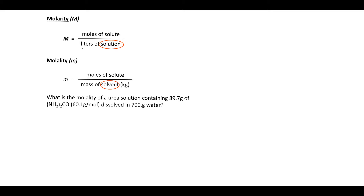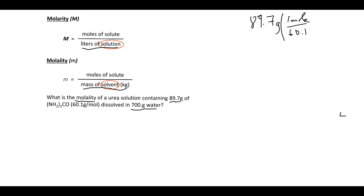For molarity and molality: we need molality for temperature-dependent conversions. Molarity (capital M) is per liter of solution; molality is per kilogram of solvent. If we have 89.7 grams of urea dissolved in 700 grams of water, we first find moles: 89.7 g / 60.1 g/mol = 1.49 mol of urea.